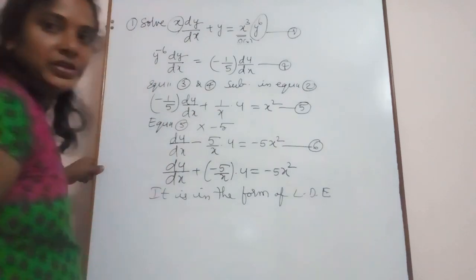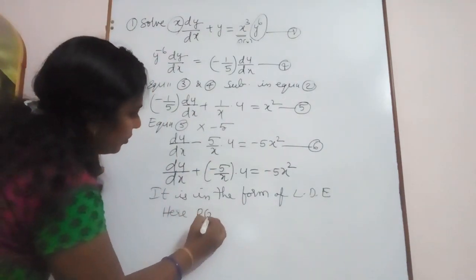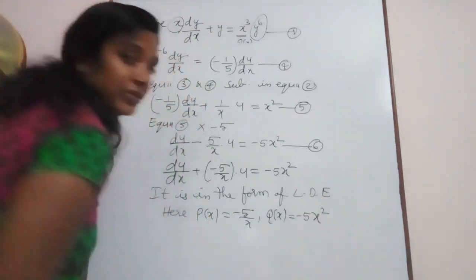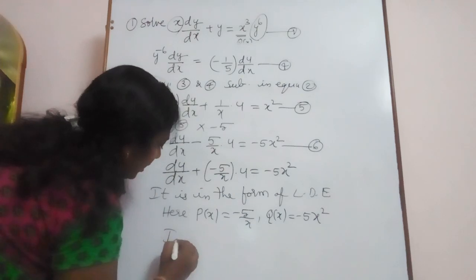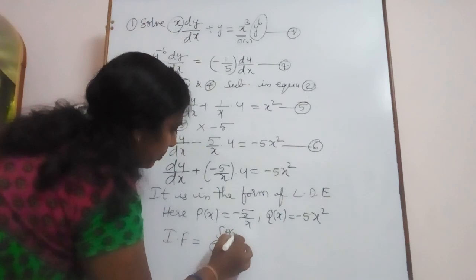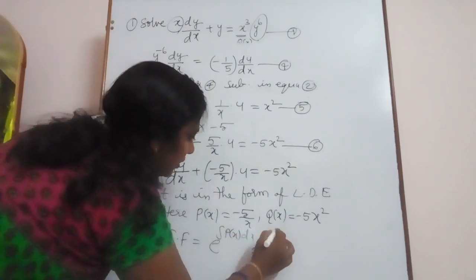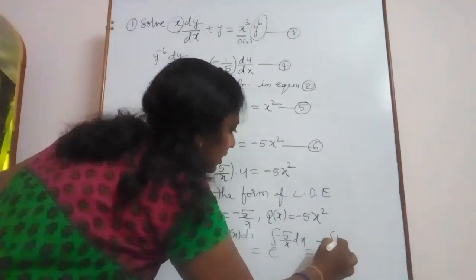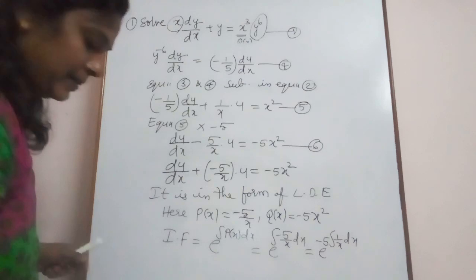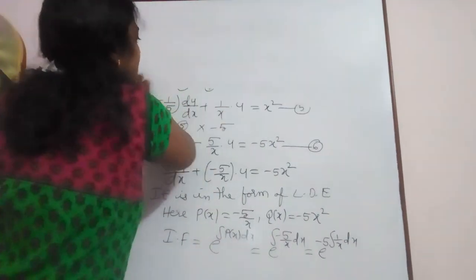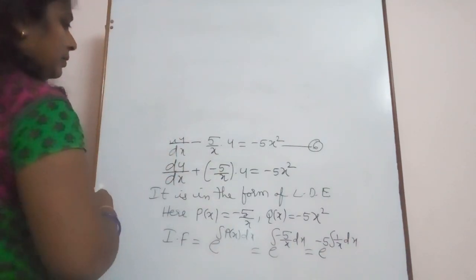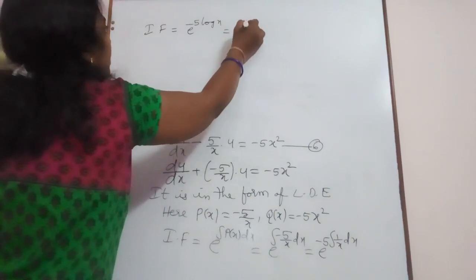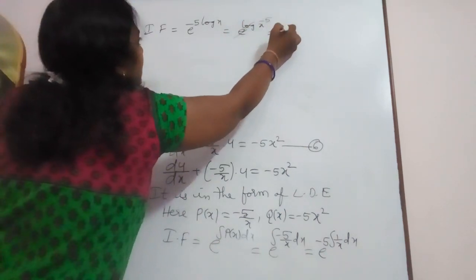This is a linear differential equation where p(x) equals minus 5/x and q(x) equals minus 5 x square. First, find the integrating factor: IF equals e power integral of p(x) dx, which is e power integral of minus 5/x dx, equal to e power minus 5 log x, equal to e power log x to the minus 5, which gives x power minus 5, that is 1 over x power 5.